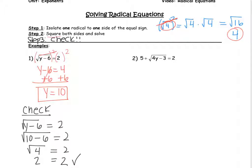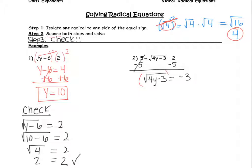In example number 2, the radical 4y minus 3 is not isolated on one side of the equal sign — there is this 5. So you want to subtract the 5 to get rid of it. Now we're left with the square root of 4y minus 3 equals 2 minus 5, which is negative 3. Now that the radical is isolated, we can square both sides. The square and the square root cancel each other out, so we're left with 4y minus 3 equals 9, because negative 3 squared is a positive 9.